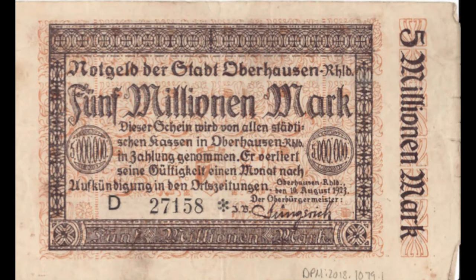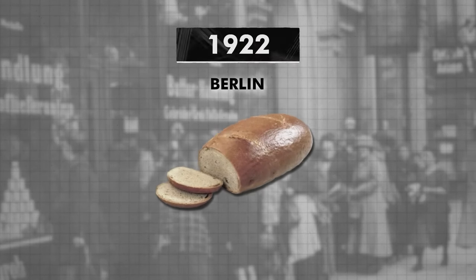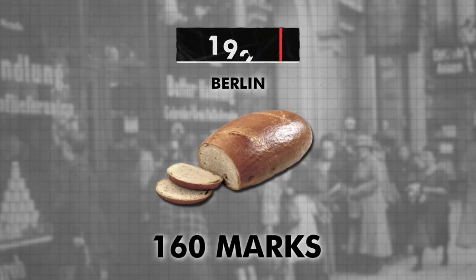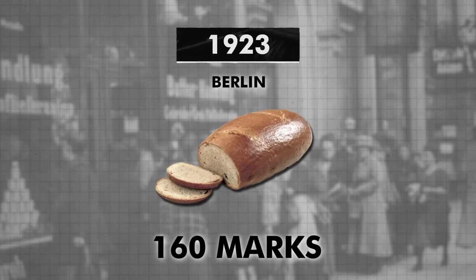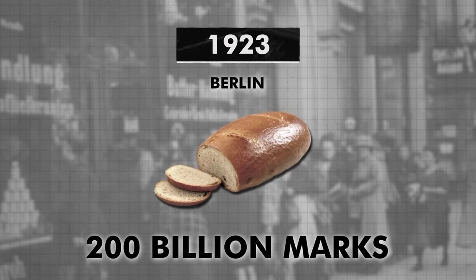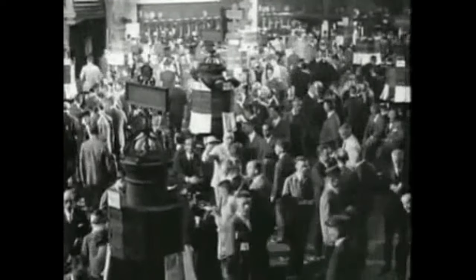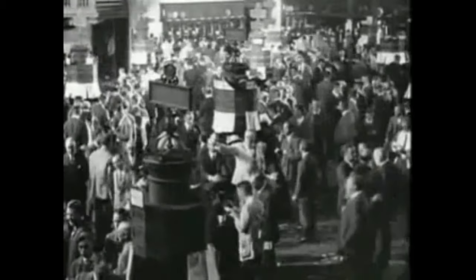Germany's currency back then was the German mark. You can't imagine how rapidly it was devalued. In 1922, in Berlin, a packet of bread cost 160 marks. The following year, in 1923, the same packet of bread cost 200 billion marks. Obviously, the economy was crippled, and the rate of unemployment rose rapidly.